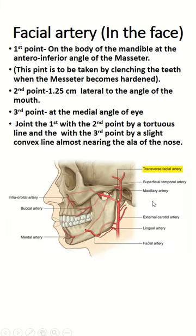Surface anatomy of the facial artery. The first point is on the inferior border of the body of the mandible, at the anterior inferior angle of the masseter muscle.